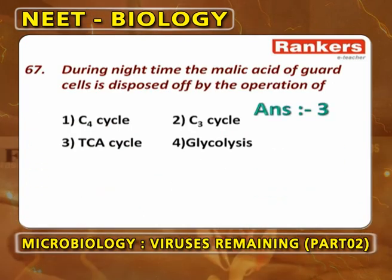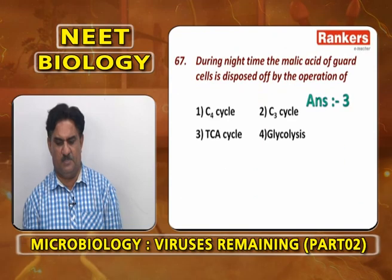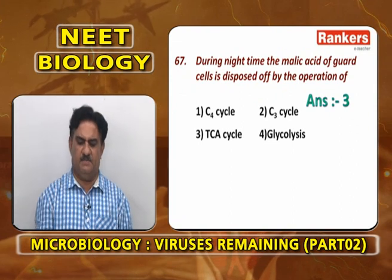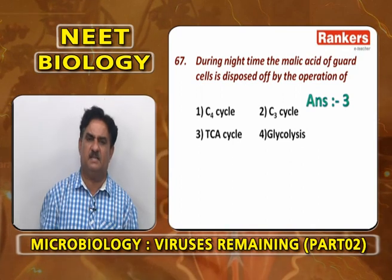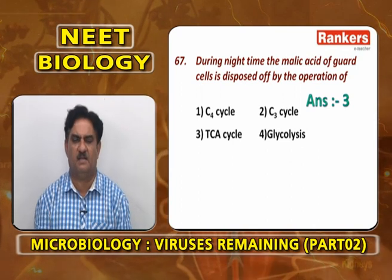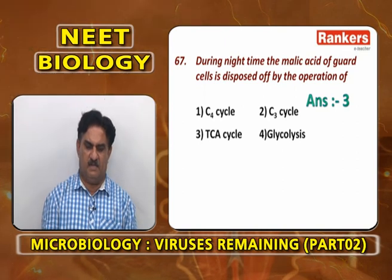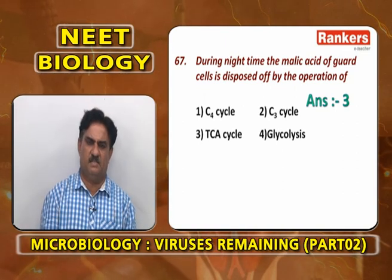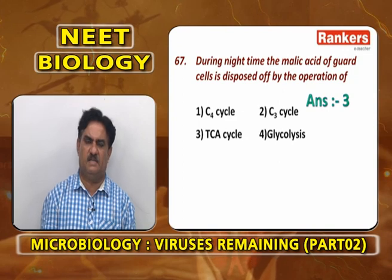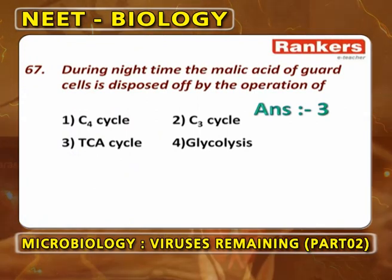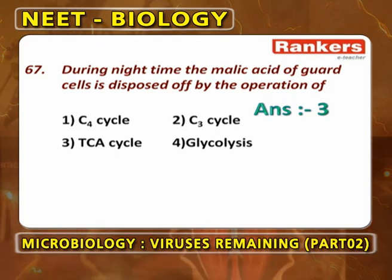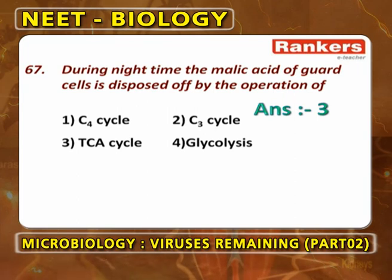During night times, the malic acid of guard cells is disposed of by the operation of the TCA (tricarboxylic acid) cycle, also called Krebs cycle. Malic acid directly enters the Krebs cycle where oxidation converts it into oxaloacetic acid, liberating NADH₂; oxaloacetic acid then combines with acetyl CoA to restart the Krebs cycle. Not C4 cycle, C3 cycle, or glycolysis — it is the TCA cycle.